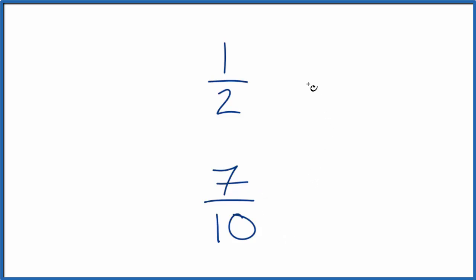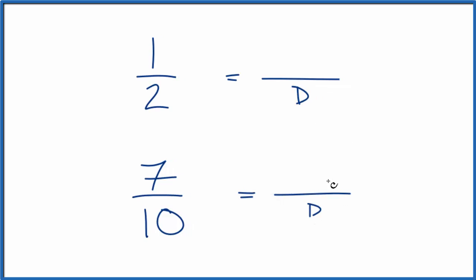There's two ways we could do this. The first, if we could get this to have a common denominator, then we could compare the numerator. Whichever had the larger numerator, since the denominator is the same, that would be the larger fraction. Let's do that.